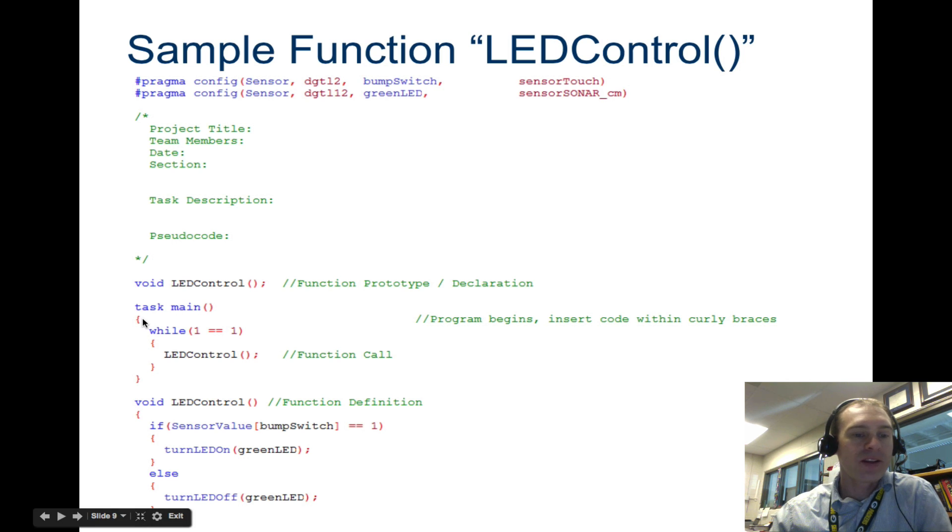You have task main, then you have your open and close brace, so your entire code is right here. That's it. That's your code. While one equals one, which means forever, run this loop, LED control. Well, what in the world is LED control? Up here it says LED control is a function. So while one is one, you're going to run this thing. Well, we don't even know what LED control is.